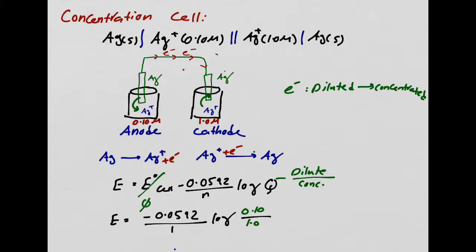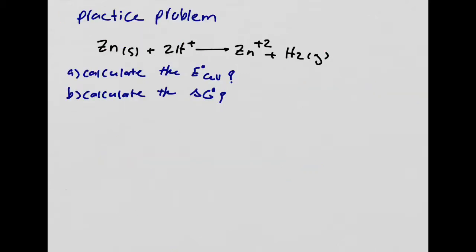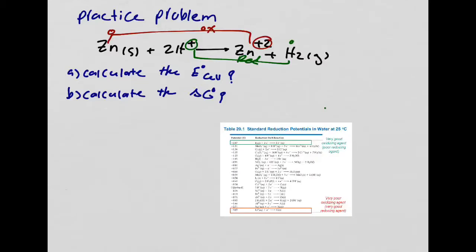Now let's do practice problems. The first problem asks you to calculate the e-cell potential at standard conditions and the delta G at standard conditions. To calculate e-cell, figure out what's been oxidized and what's been reduced. Zinc is going from zero to plus two — it's being oxidized. Hydrogen is going from plus to zero — it's being reduced. Look at your SRP table for the zinc value.